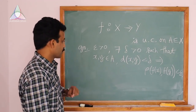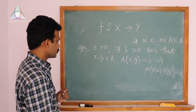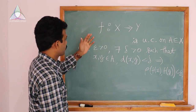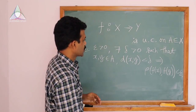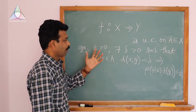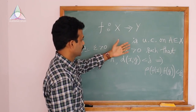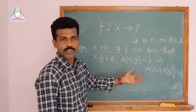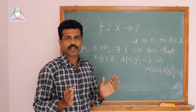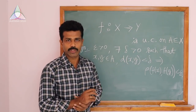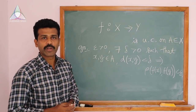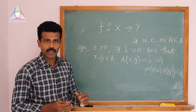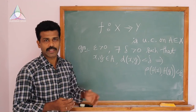From this we can observe that a uniformly continuous function carries all Cauchy sequences in A to Cauchy sequences in Y — it sends Cauchy sequences to Cauchy sequences. This is not happening for a general continuous function on metric spaces, but for uniform continuity, this is happening.